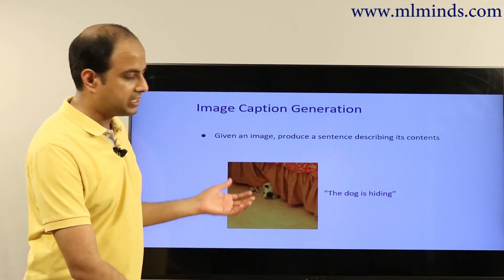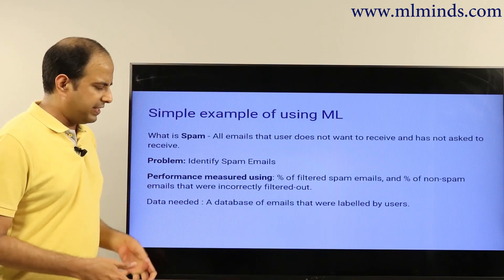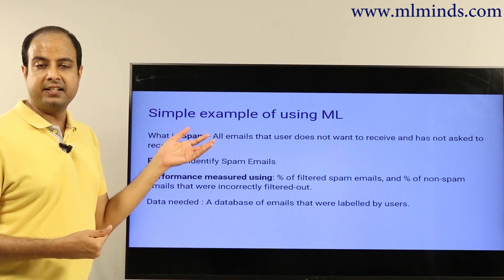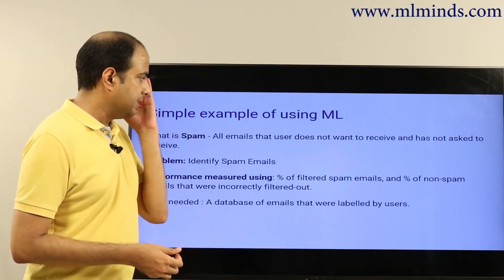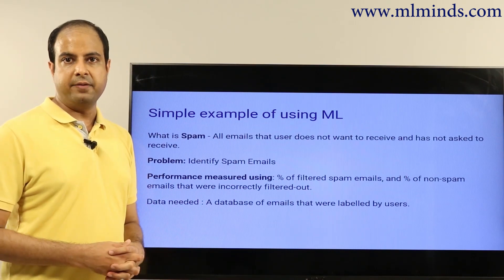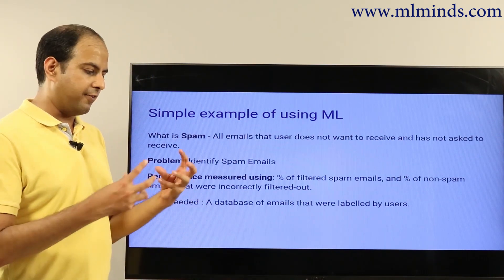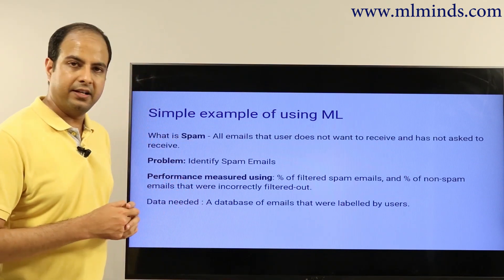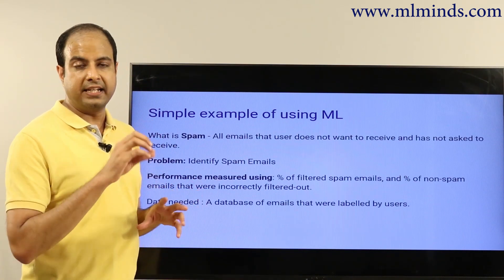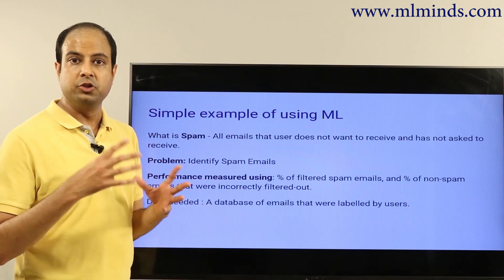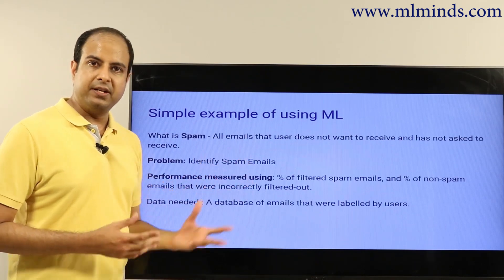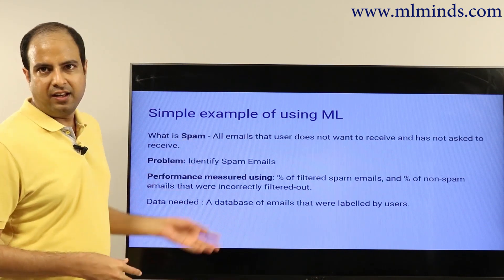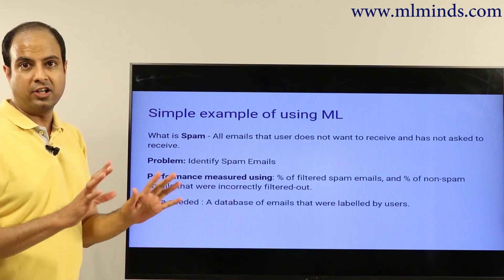A very simple and concrete example of machine learning is the spam classifier that sits in all of our inboxes. If you use Gmail or any other email provider, there is a module called a spam classifier. Whenever an email arrives, the spam classifier runs on it, tries to figure out whether it is spam or a useful email, and if it is spam, it puts it in the spam or junk folder.